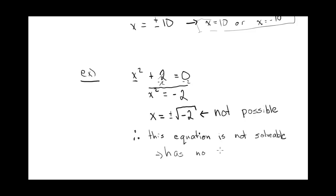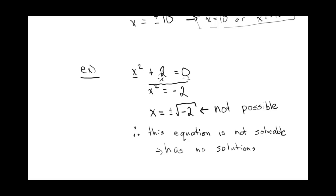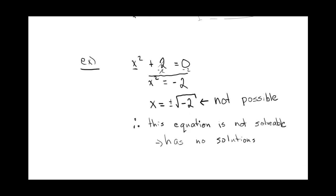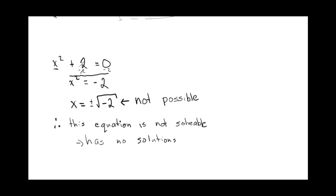So that's another interesting thing that happens with quadratic equations. Sometimes the equation has no solutions. We said sometimes it has two solutions — you get the positive and negative numbers. And sometimes it doesn't have any solutions.